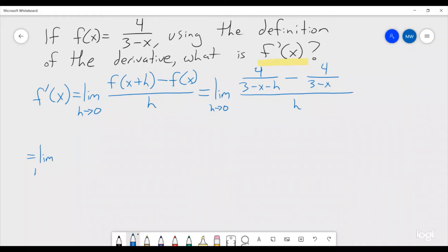So let me first just rewrite this. It's the limit as h goes to 0, a whole bunch of stuff over h. We have 4 divided by 3 minus x minus h and we have minus 4 divided by 3 minus x. Now, how do we get a common denominator? Well, we're just going to multiply each fraction by 1, but that 1 is going to be a very special type of 1.